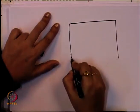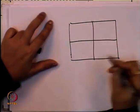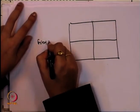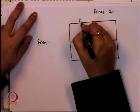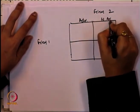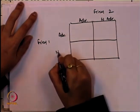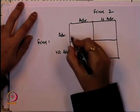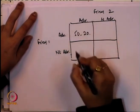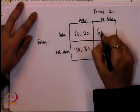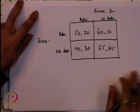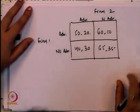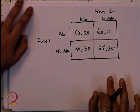We will change the payoff matrix slightly for firm 1 and firm 2. The new matrix still has advertise and do not advertise options for both firms. The payoffs in the four cases are now different from the previous example. We will examine whether equilibrium can still be reached by looking at the strategies taken by firm 1 and firm 2.